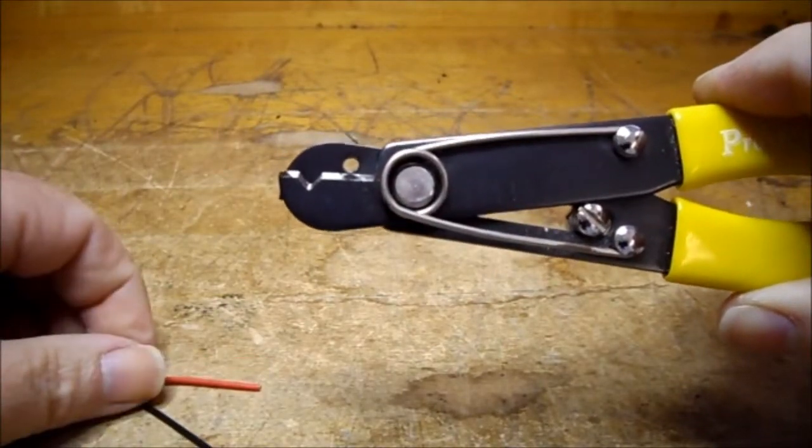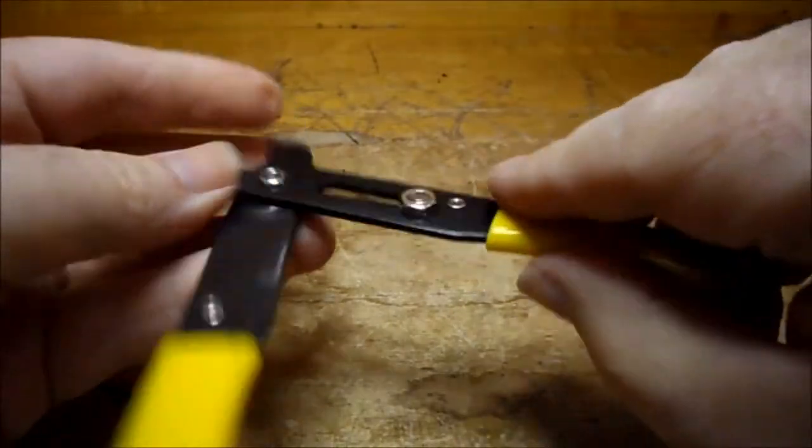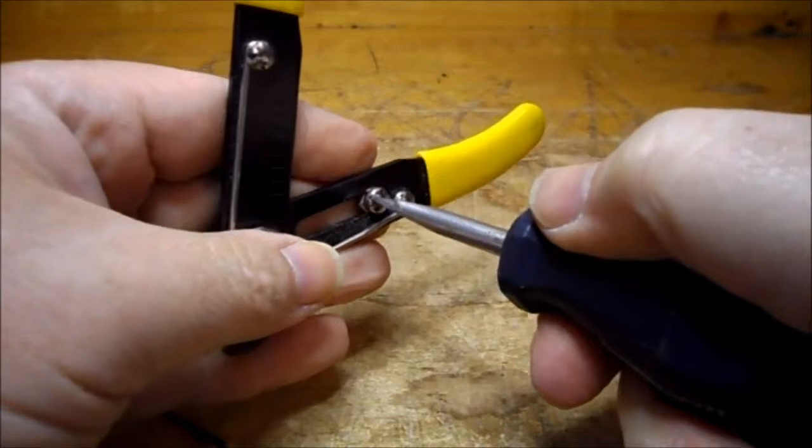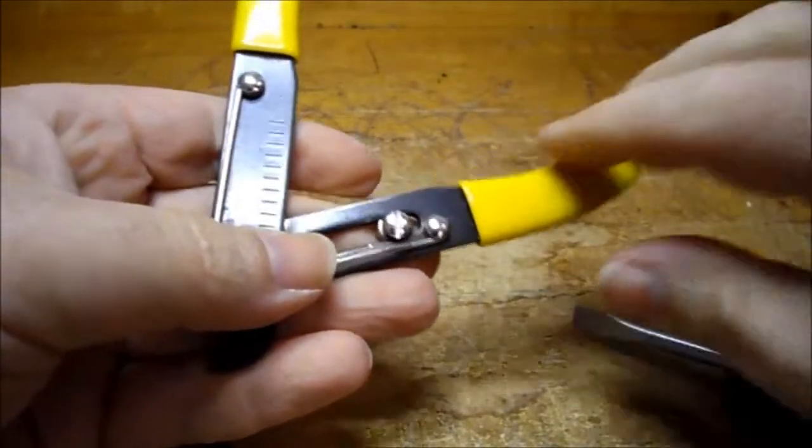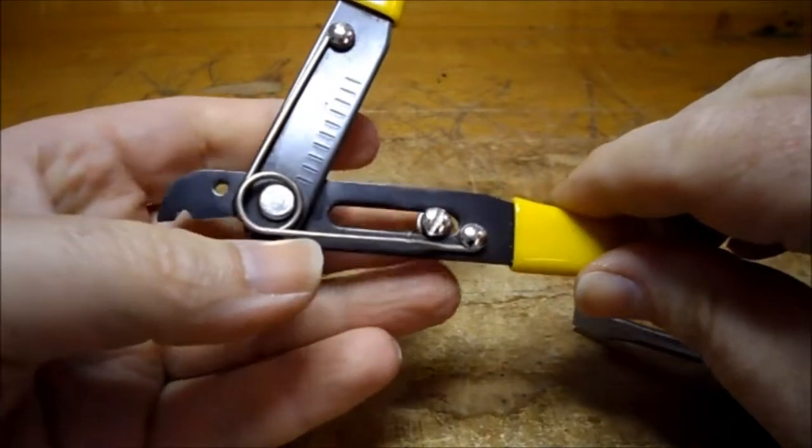So what we have on here is a screw and a nut. If you take a small flat bladed screwdriver and you just loosen it, you can see that you can move the screw and the nut back and forth.